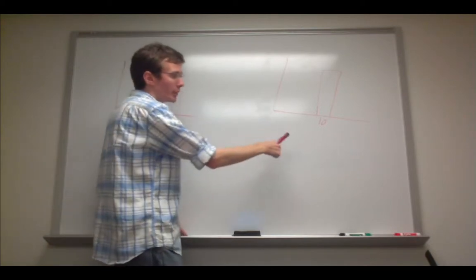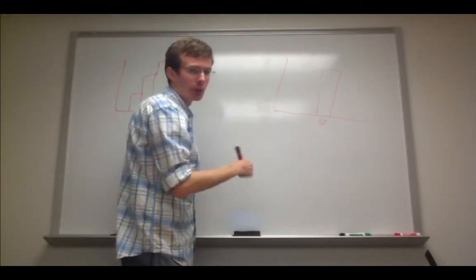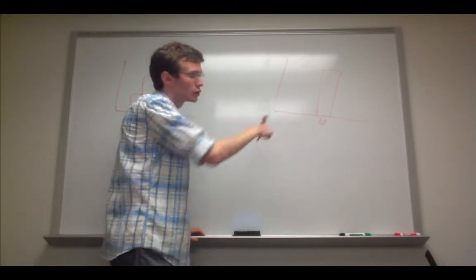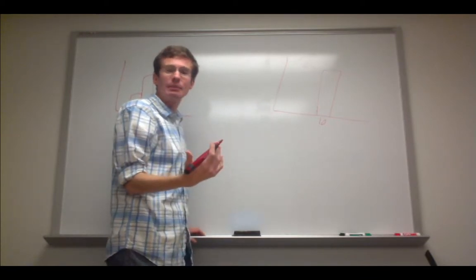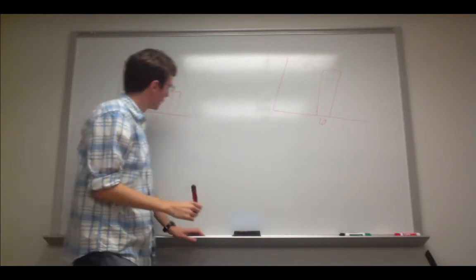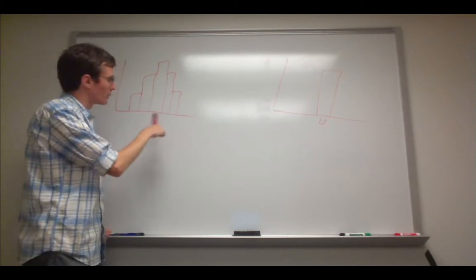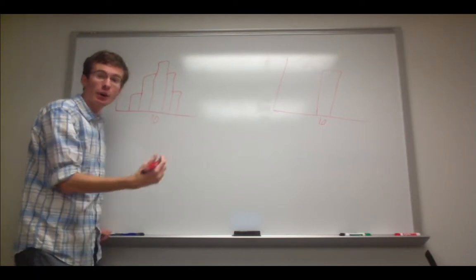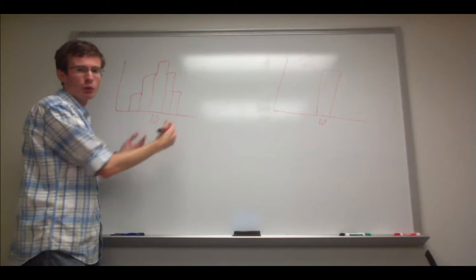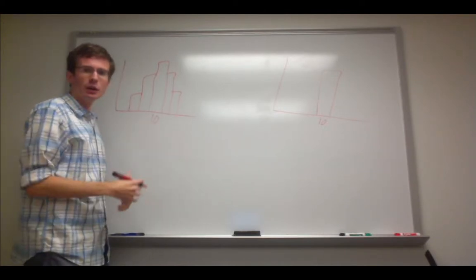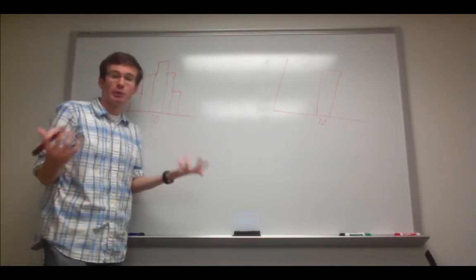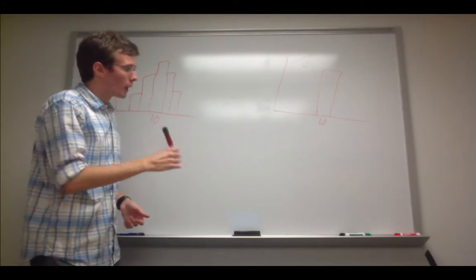However, there's no variability in this distribution. If I were to randomly select a sample from this distribution, it would always be 10. There's no variability. In this case, there is some variability around the mean. So if I randomly selected a value, it could be on the left or the right of 10. It could be 10 itself. But the point is, there's variability there. So to quantify this...